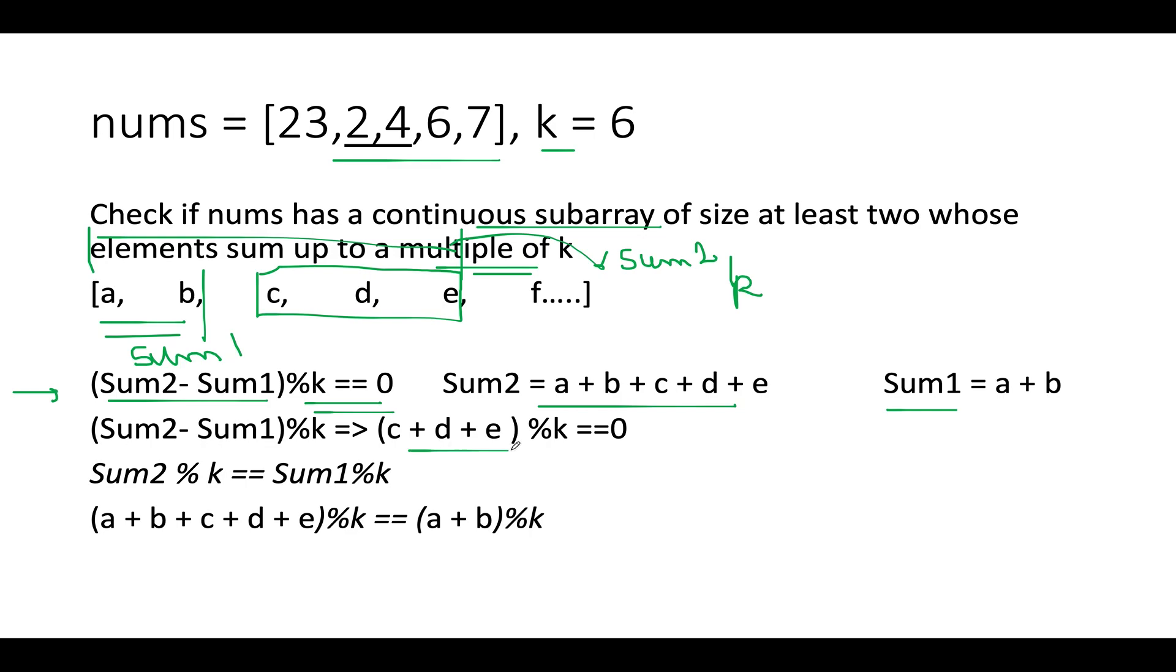What do I get? I get c plus d plus e and we know that this is a multiple of k. So this will give you modulus k 0 value. This is what we need to check.